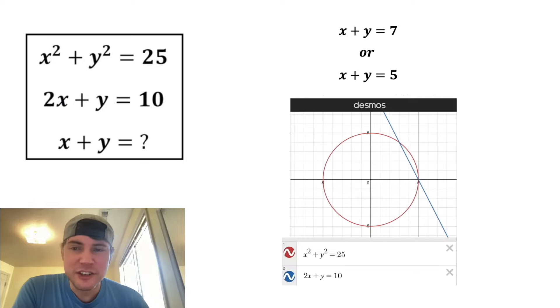And if you want to see what this looks like graphically, here it is right here. The x squared plus y squared equals 25 is the red circle, and the 2x plus y equals 10 is this blue line. And here's our two intersection points, three, four, and five, zero. How exciting.